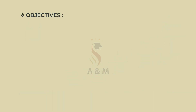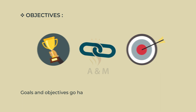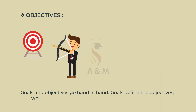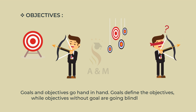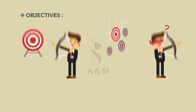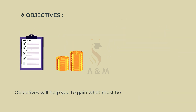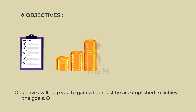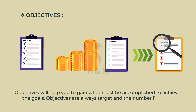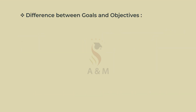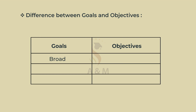Now let us know about objectives. Goals and objectives go hand in hand. Goals define the objectives, while objectives without goals are going blindly wherever the direction is guiding. Objectives will help you to gain what must be accomplished to achieve the goals. Objectives are always target and number focused, unlike goals which talk about the bigger picture. Goals are broad whereas objectives are specific. Goals are intangible whereas objectives are tangible. Goals are abstract whereas objectives are measurable.